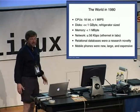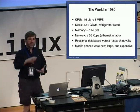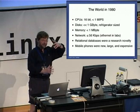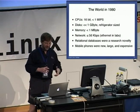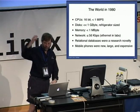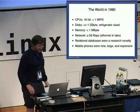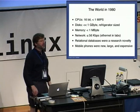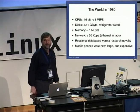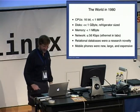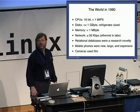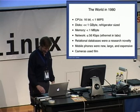Networks were less than or equal to 56 kilobits per second. The ARPANET backbone was 56 kilobits. And although Ethernet existed at Xerox PARC, it wasn't really out there yet. Relational databases were really a research novelty — that's what I was working on. Mobile phones actually did exist, but they were those brick-sized things. They were large, they were expensive — very expensive. And cameras used film.